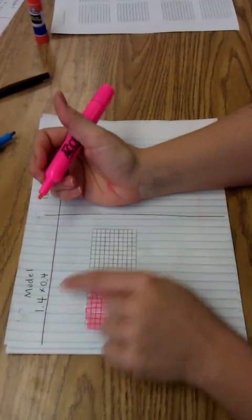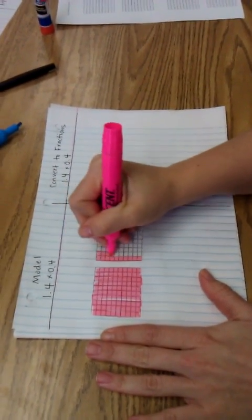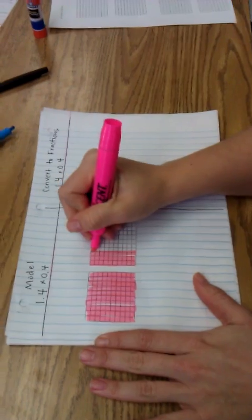And then I need to shade on my second one 4 tenths. So there's one tenth, two tenths, three tenths, four tenths.